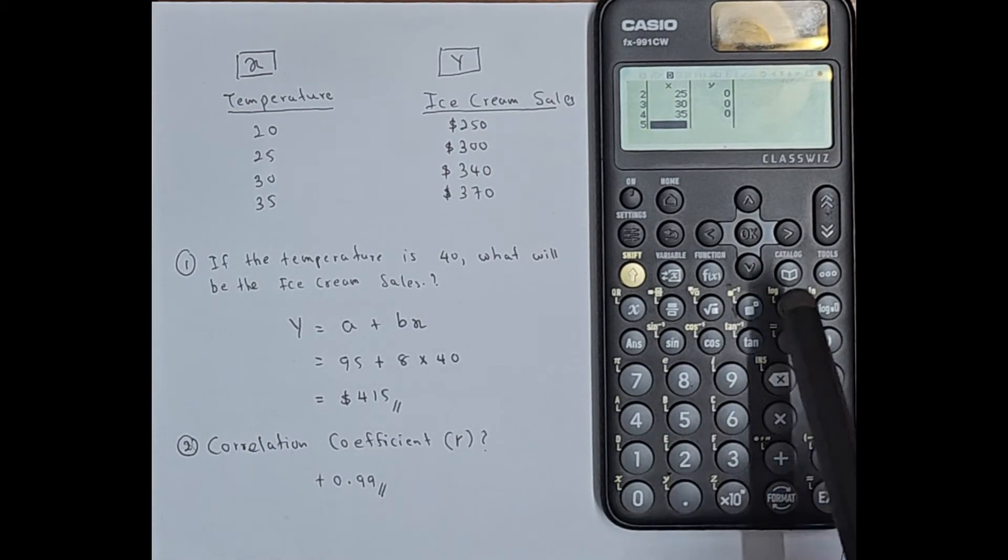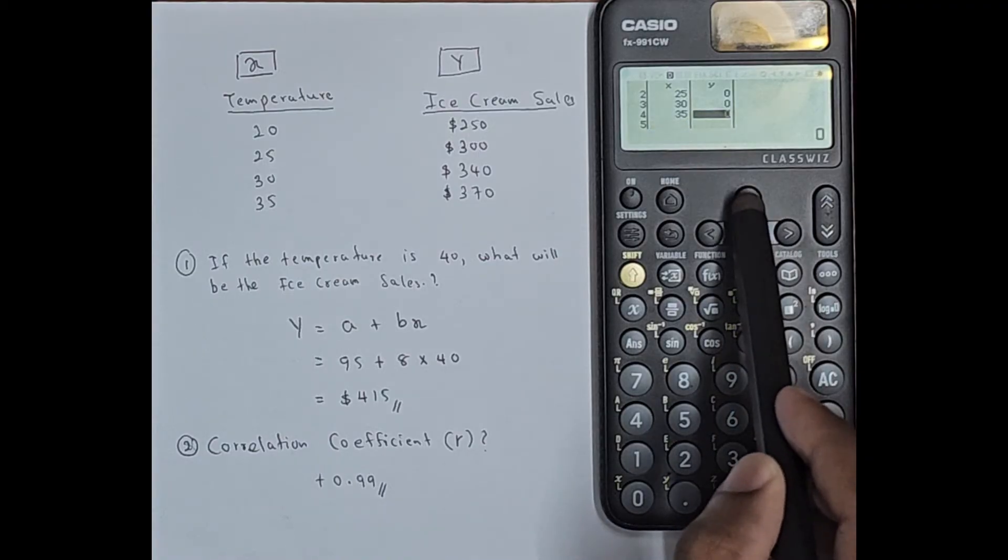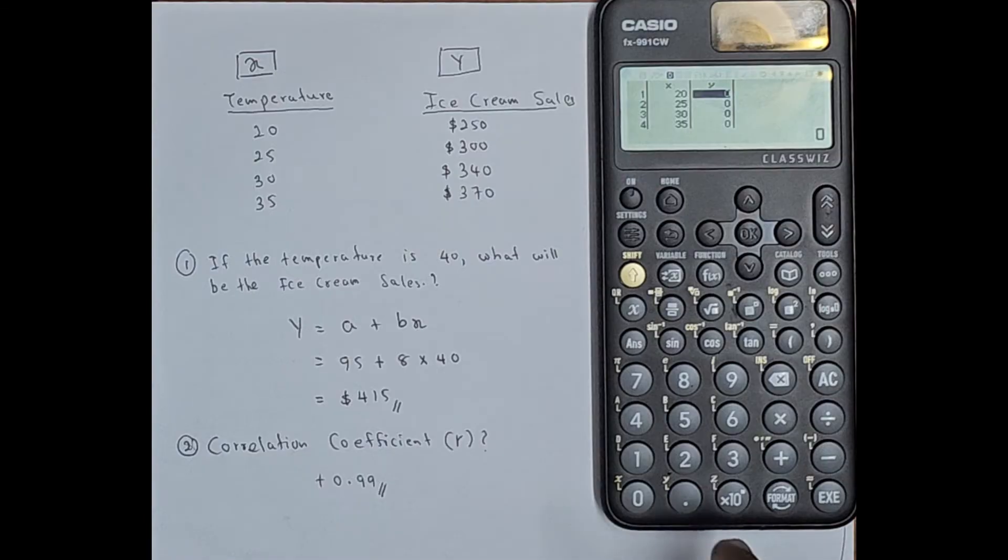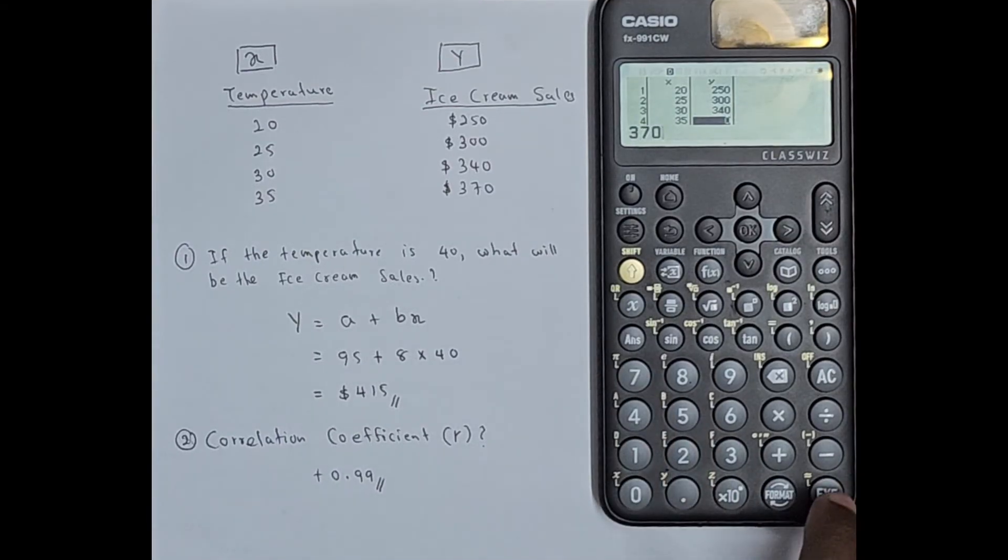Then what I can do using these arrows: I can go to the top of the Y column. I will enter the value for Y: 250, press this EXE, then 300 EXE, 340 EXE, 370. Make sure to press EXE.